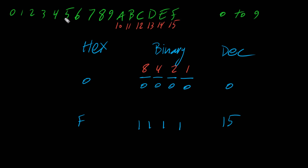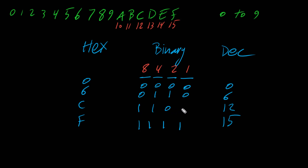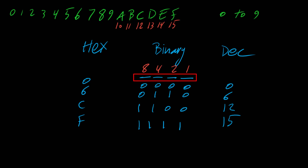Let's look at another hexadecimal number — let's say 6. To get 6, we turn on 4 and 2, so 8 is off, 4 is on, 2 is on, and 1 is off, giving us decimal 6. Now let's say we have C, which is 12. To get 12 we turn on 8 and 4. So for every hex number we have 4 bits, and depending on the value, some bits are turned on and some off. For 6 we have 0,1,1,0; for C we have 1,1,0,0; and for F all 4 bits are turned on giving us 15 in decimal.